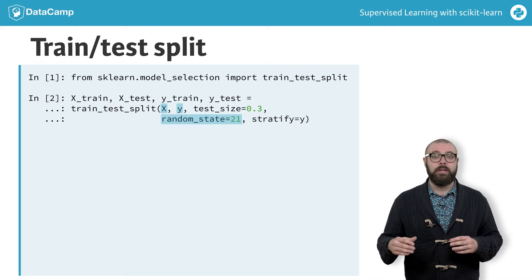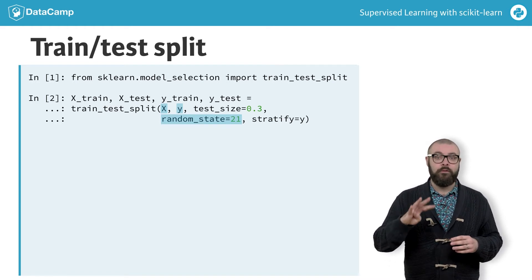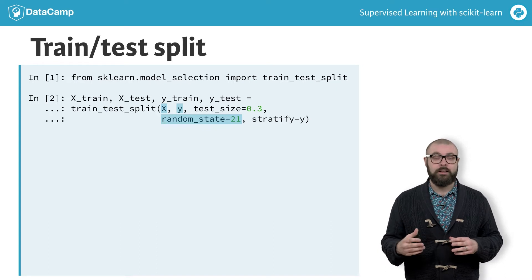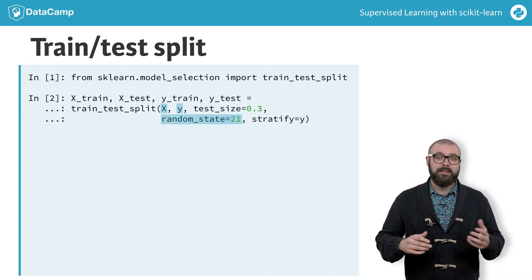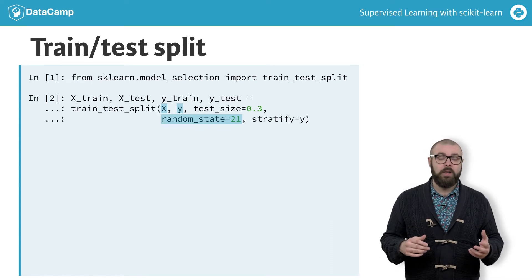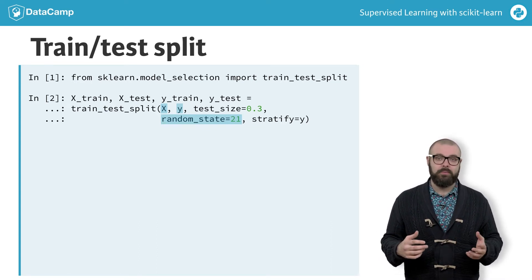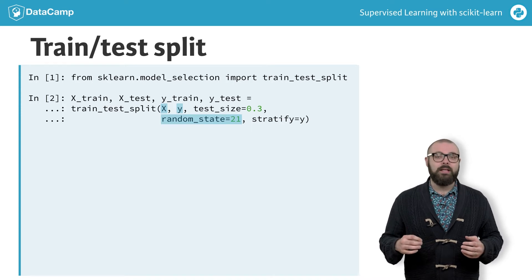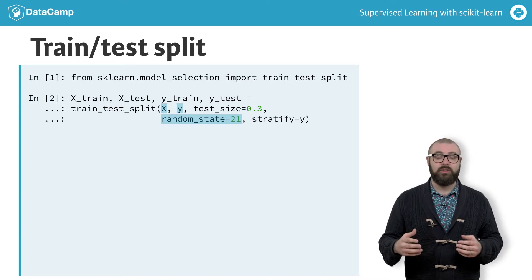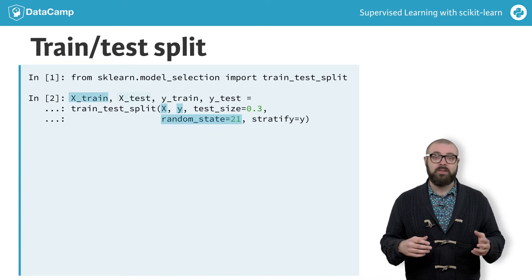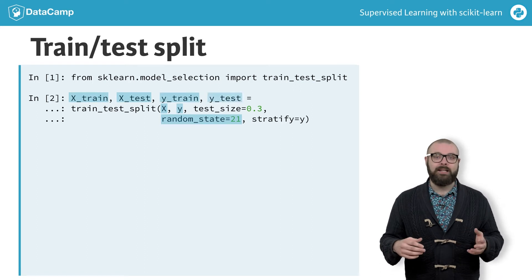train_test_split returns four arrays: the training data, the test data, the training labels, and the test labels. We unpack these into four variables: X_train, X_test, y_train, and y_test respectively.